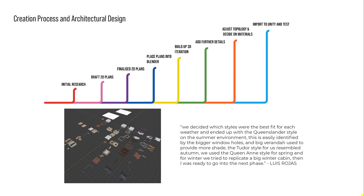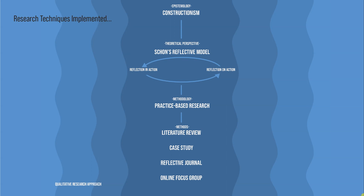These were the steps taken from beginning to end. Semester one focused on researching, drafting 2D plans, and testing in an initial prototype, before going back through in semester two to create a more detailed and complete experience. The architectural styles chosen were the Queenslander style for the summer environment, Tudor style for autumn, Queen Anne for spring, and a winter cabin for winter. The research techniques implemented were constructionism, which led into Schön's reflective model — reflection in action and reflection on action — constantly looking back at our work and identifying areas to improve or develop further to enhance the overall user experience.